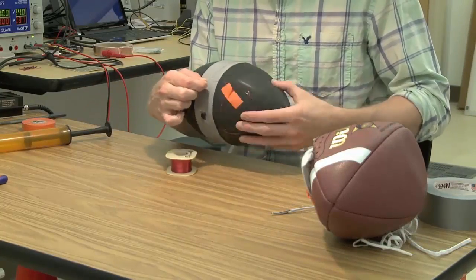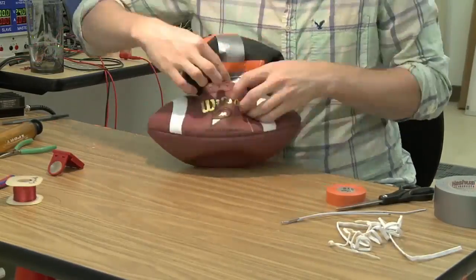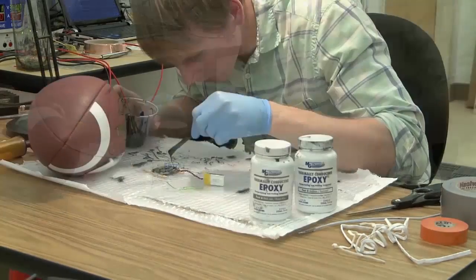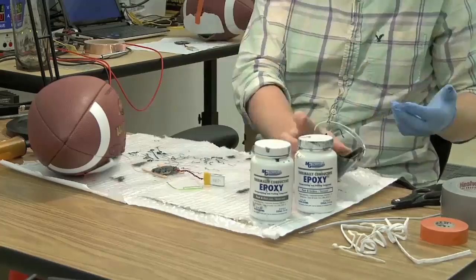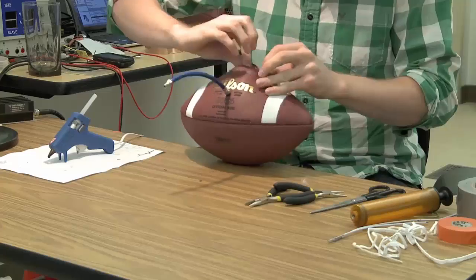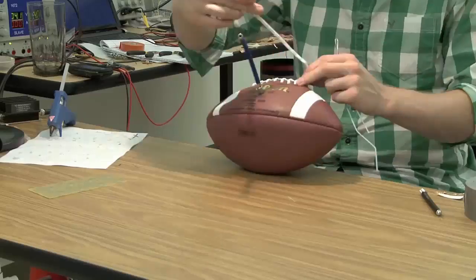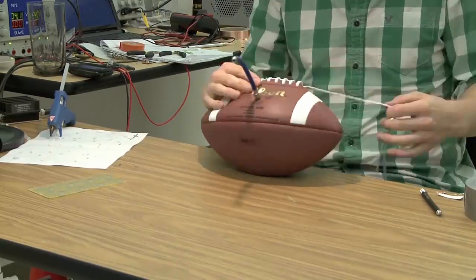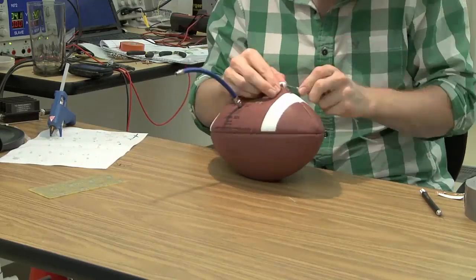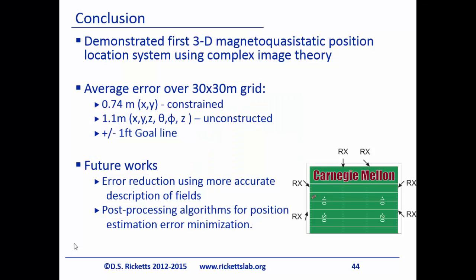This shows building the ball. We remove the bladder, wind the antenna around the bladder, deflate it, and insert it back inside the football. We attach the circuits and epoxy them so a kick doesn't break the circuit. The last and hardest part is lacing the ball back together — this took quite a few hours to figure out. Once done, we inflate the ball and it's ready to go.